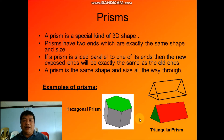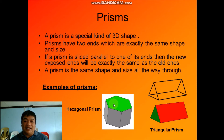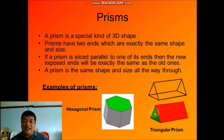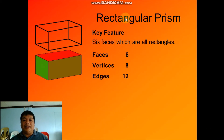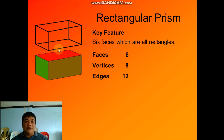Examples of prisms include the hexagonal prism and the triangular prism. Prisms can be identified based on their bases and named according to their base shape. The base here is hexagonal, so it is called a hexagonal prism. This one has a triangle as its base, so it is called a triangular prism. Another one is the rectangular prism — it is called a rectangular prism because it has a rectangle as its base.